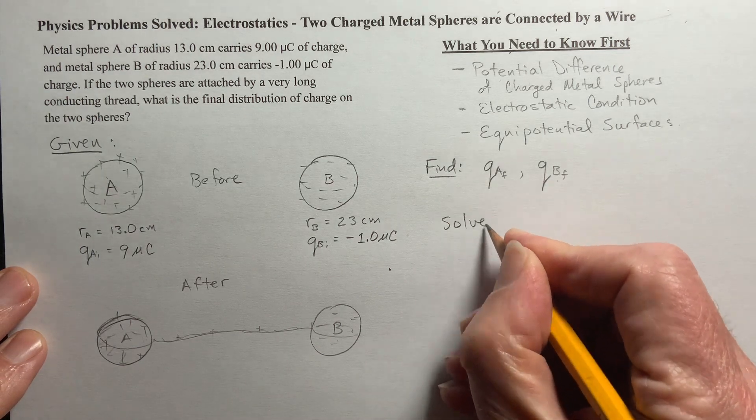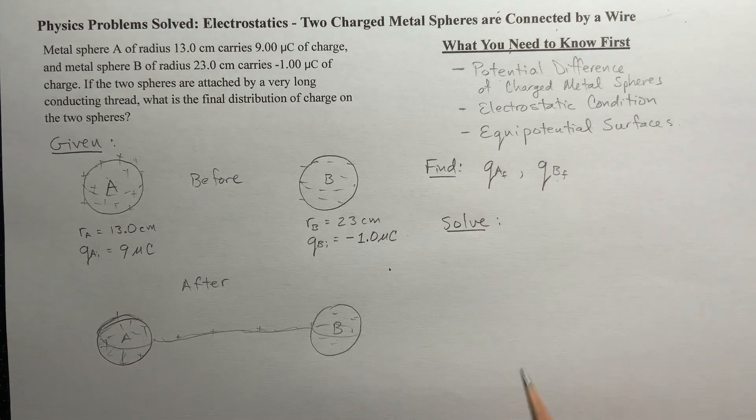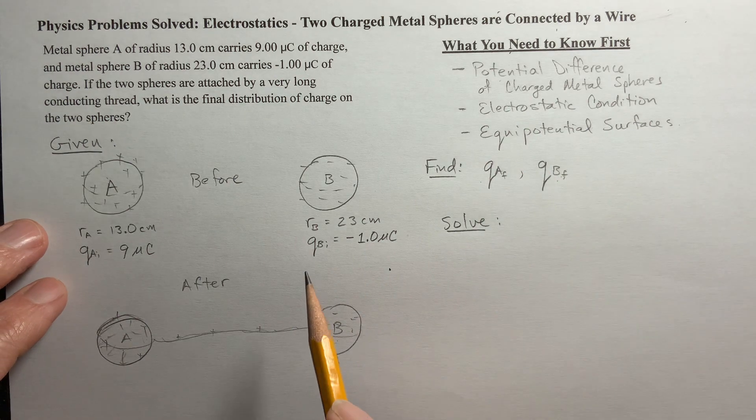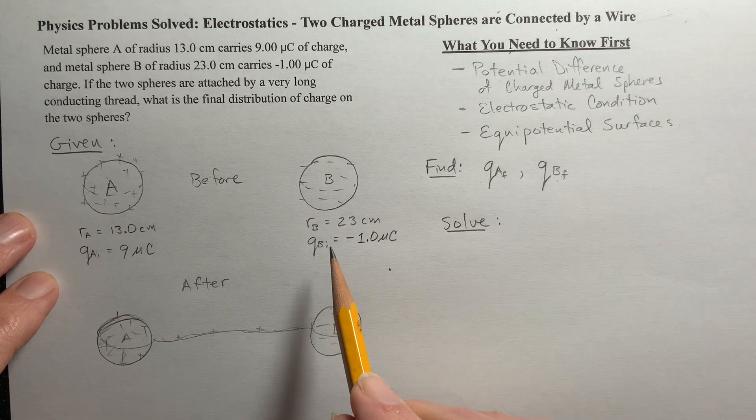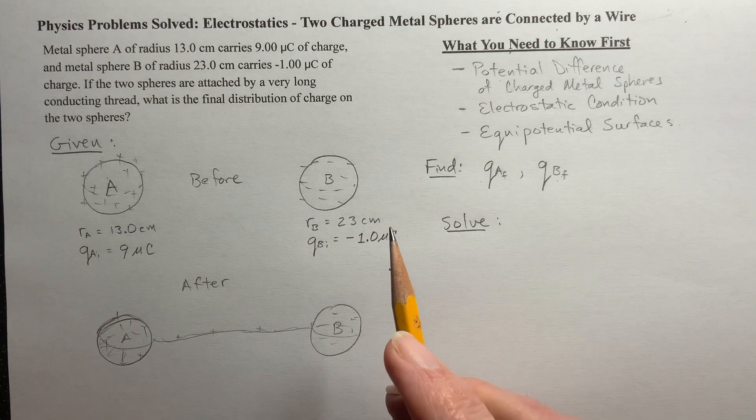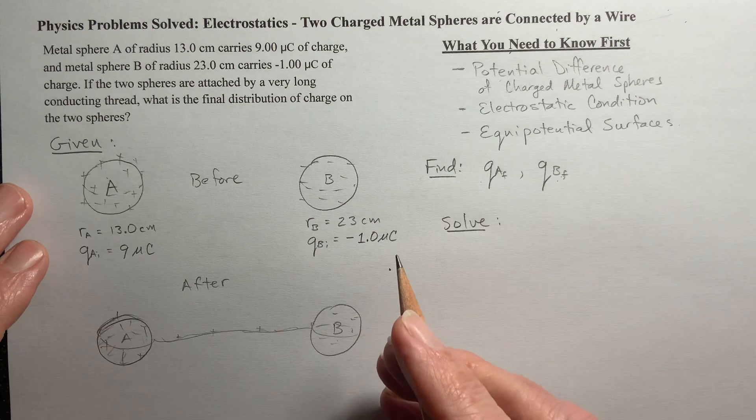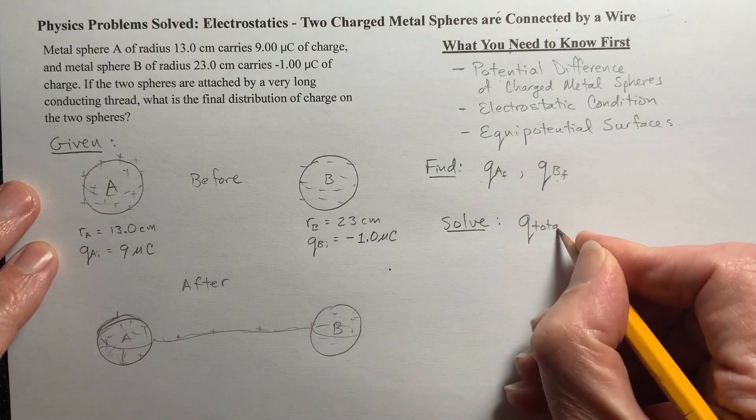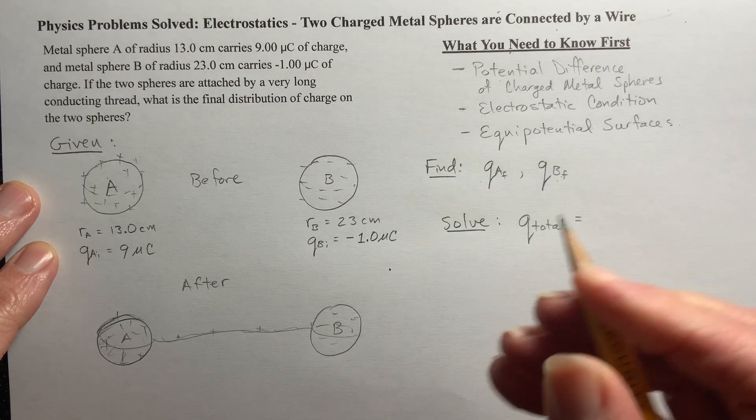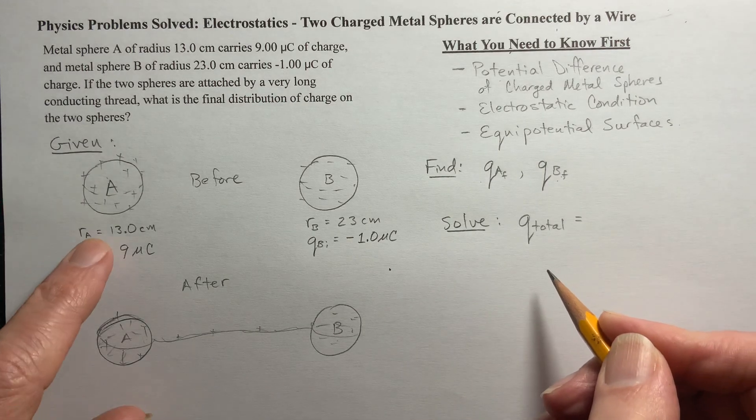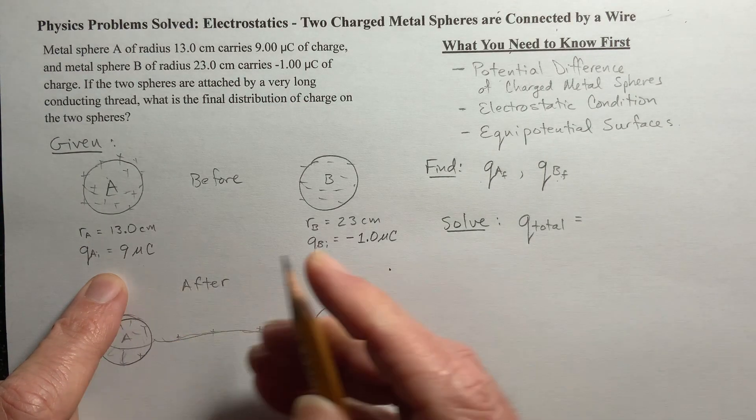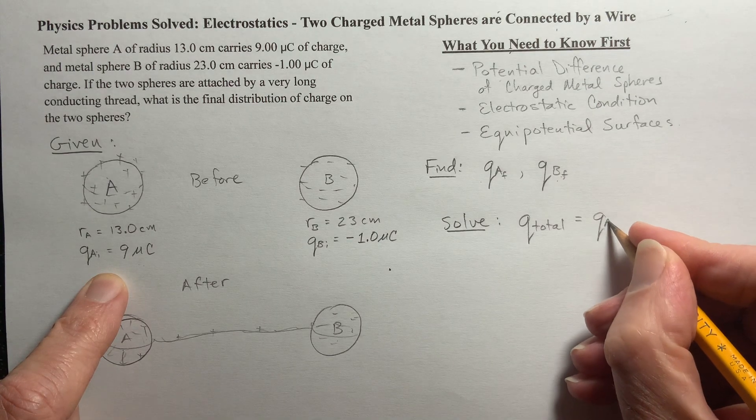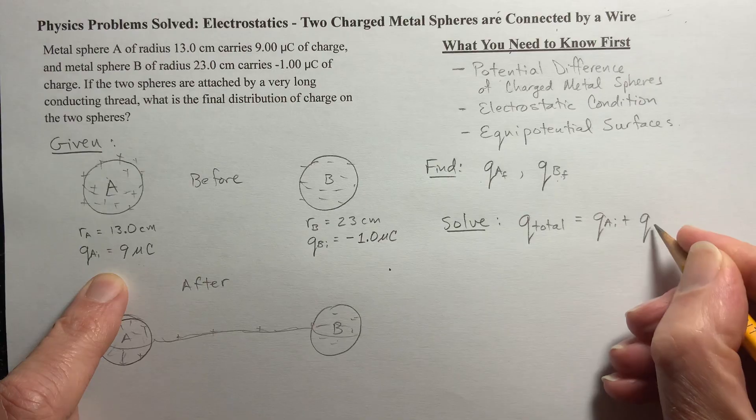Now let's solve it. I've got two unknowns here. But here's one thing I know: the total amount of charge in this system isn't changing. So what I'm going to do is I'm going to say the total charge is going to be a constant. Now that total charge on A, we have, that's going to be the charge on A plus the charge on B.